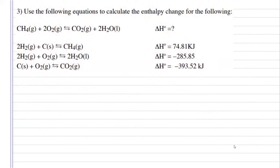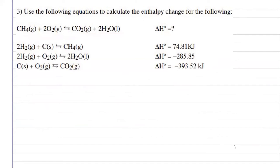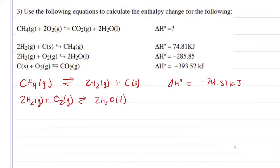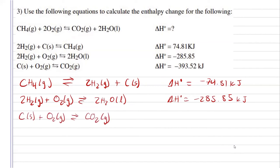For three, same thing. This is the reaction that we want, we are given our three steps. Let's see how we can manipulate them. The first reaction has methane as a product, but I need it as a reactant, so I'm going to have to flip it. Doing that will change its enthalpy from positive to negative. For the second reaction, I can just keep it as is since it will cancel out my hydrogens, so no change to the enthalpy there. And for the third one, it has carbon dioxide as a product, and I need it as a product, so I can just keep that one as is. No changes there for the enthalpy either.